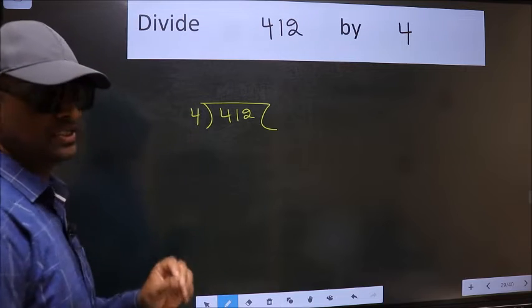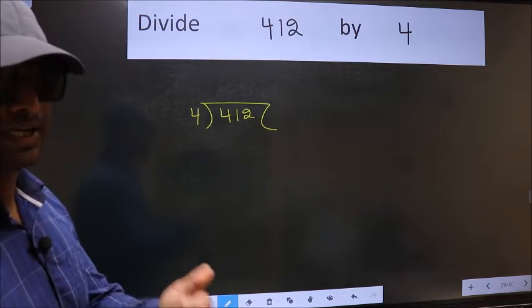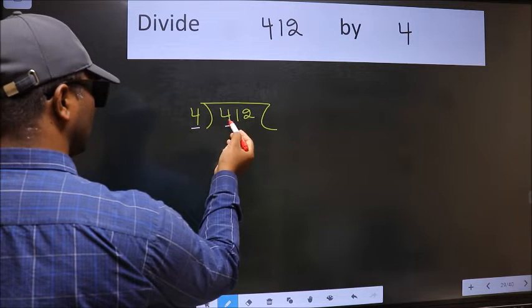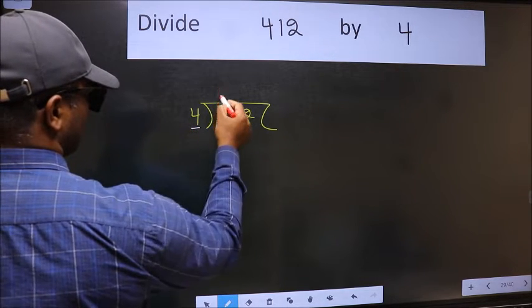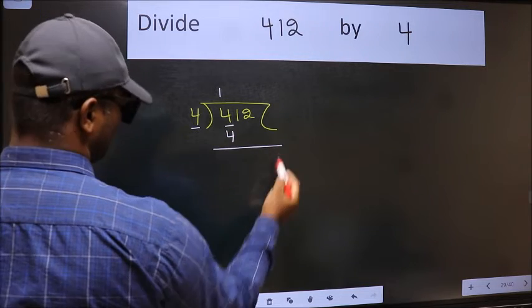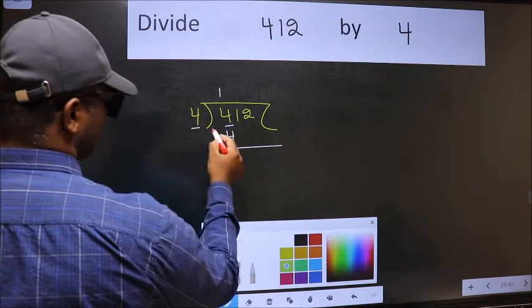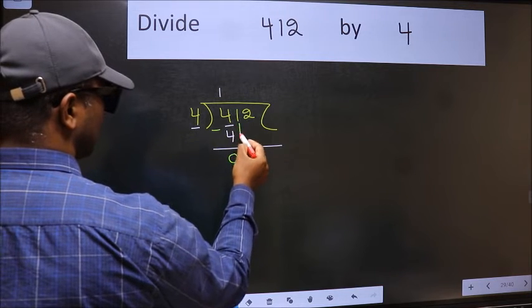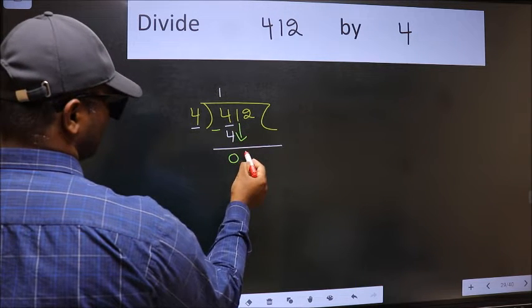This is your step one. Next, here we have 4, here also 4. When do we get 4 in the 4 table? 4 ones 4. Now we should subtract, we get zero. After this, bring down the beside number, so 1 down.